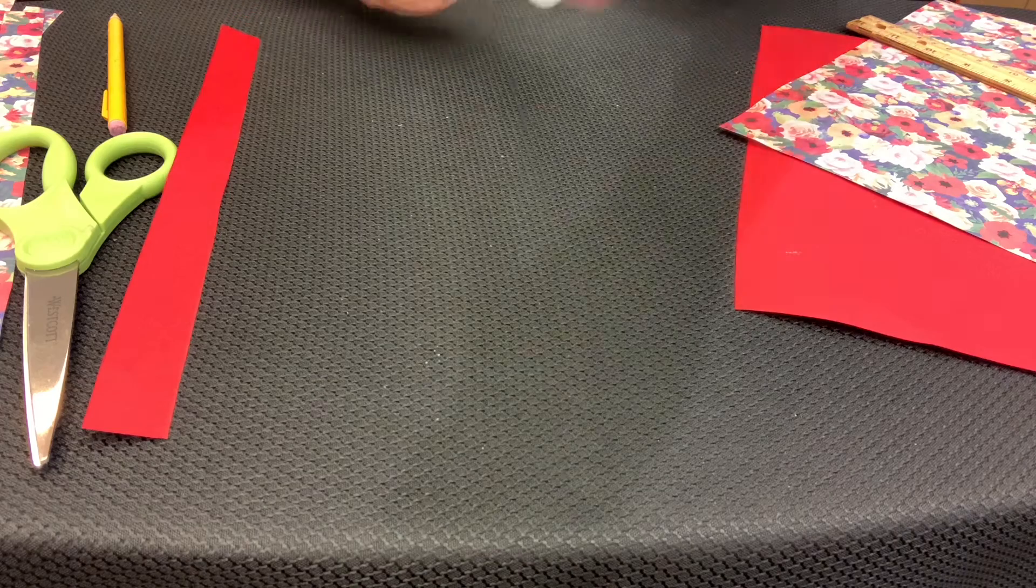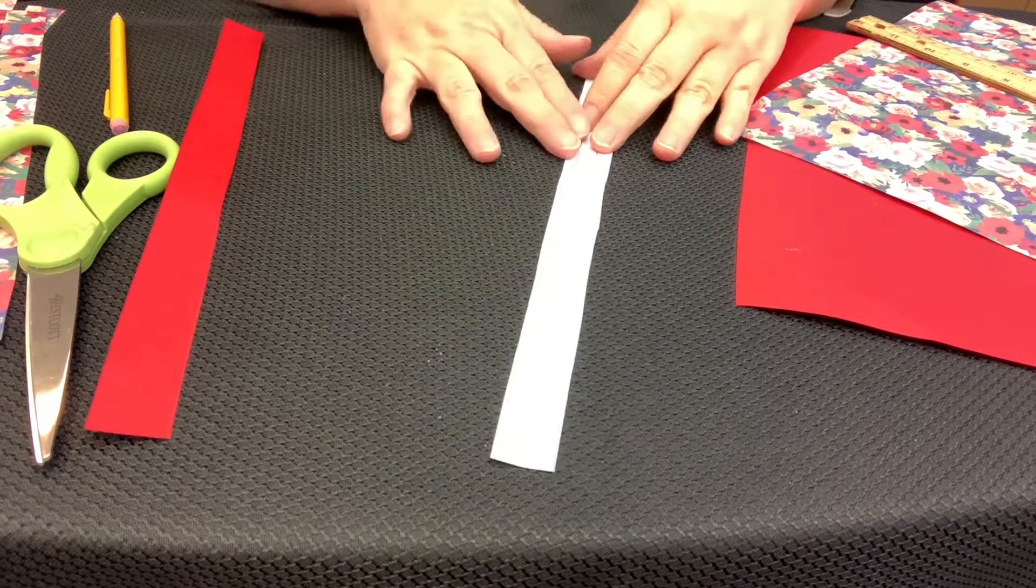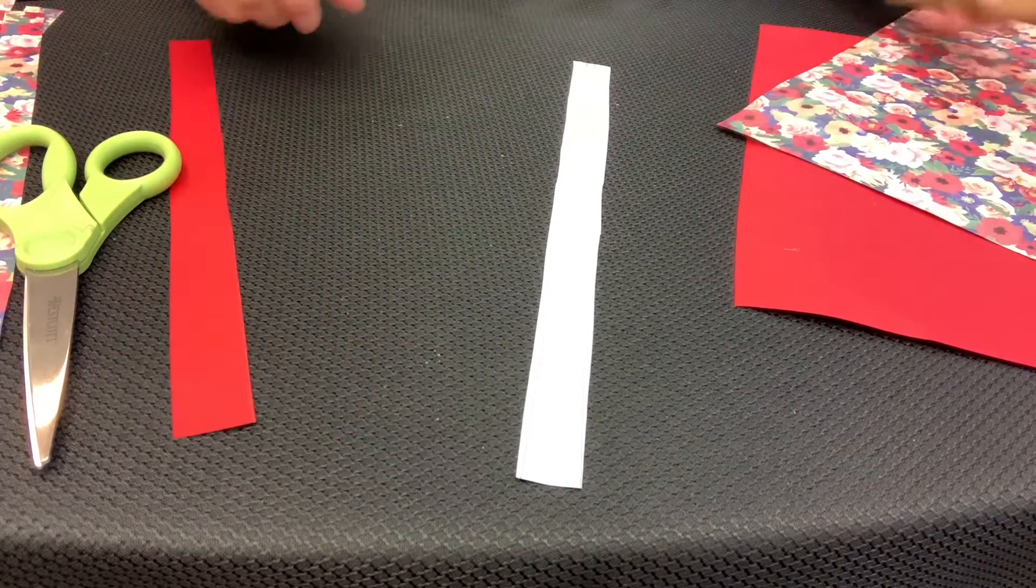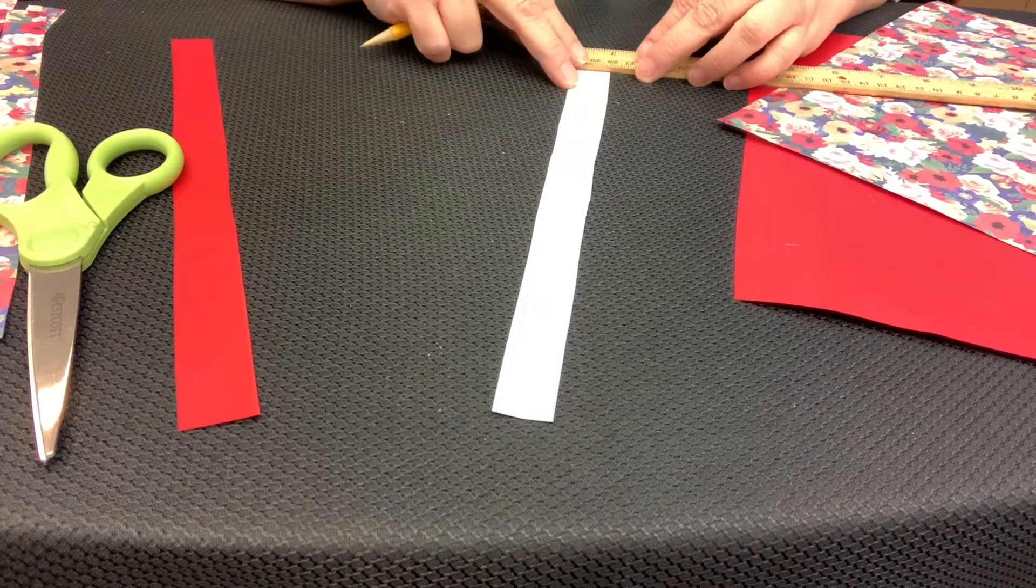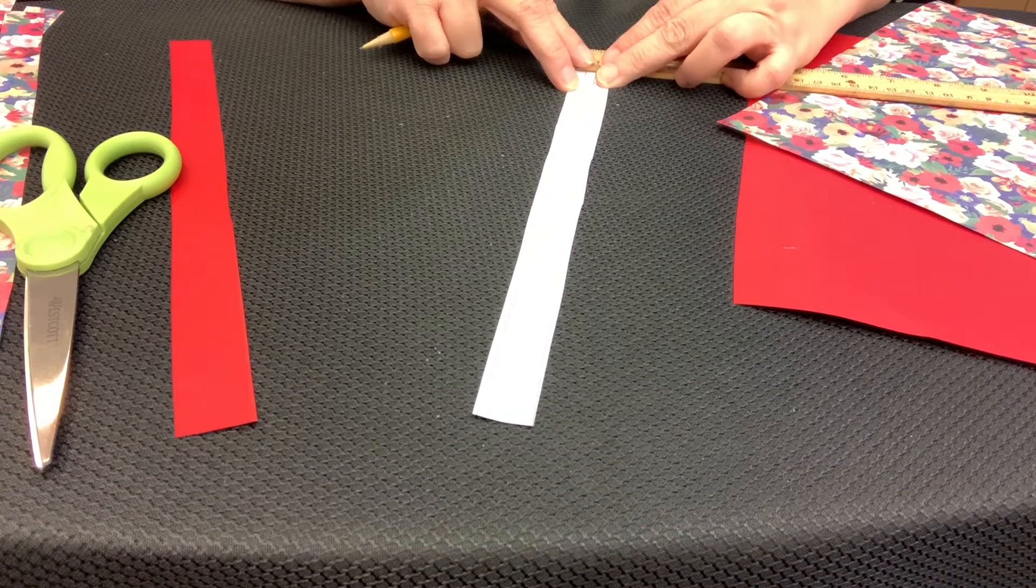Next, we're going to cut those strips down into what looks like an elongated triangle. First, on one end you're going to find the middle of the strip.